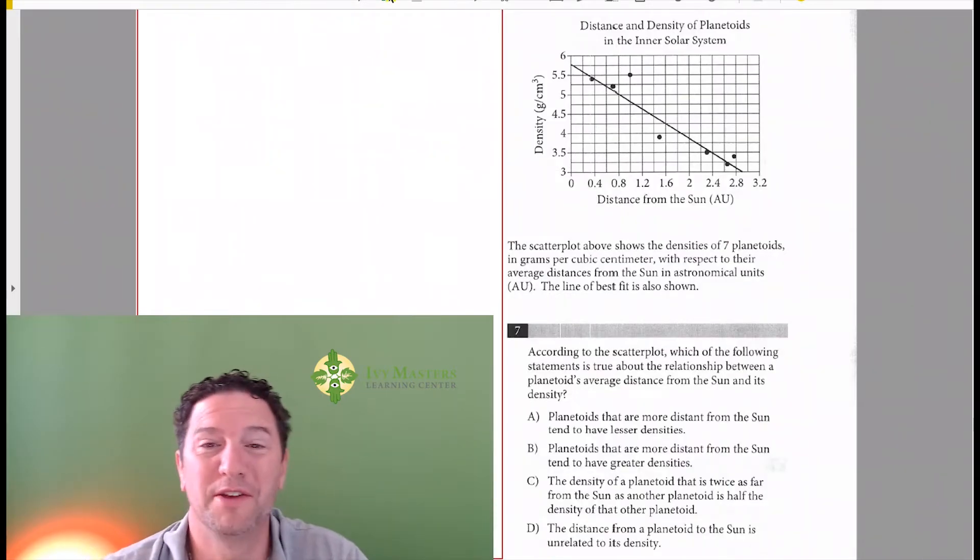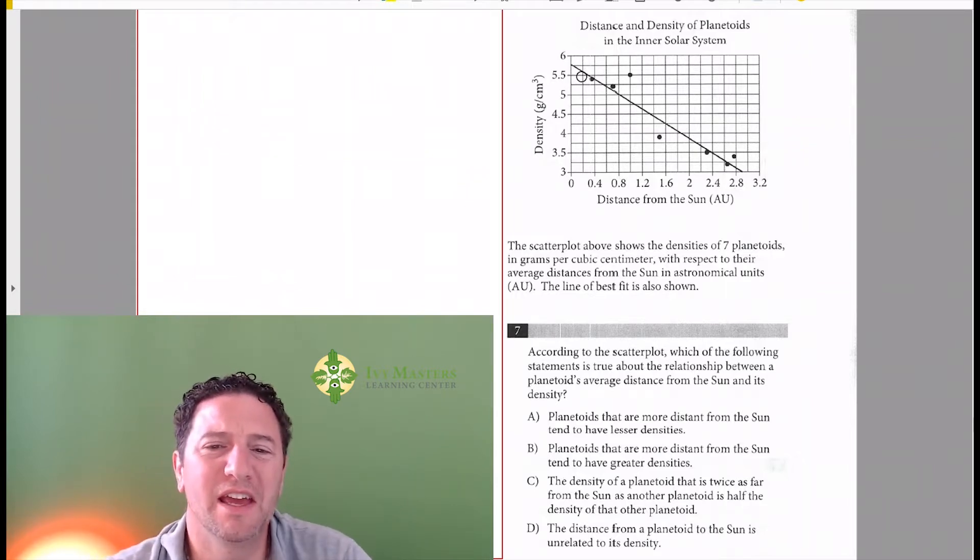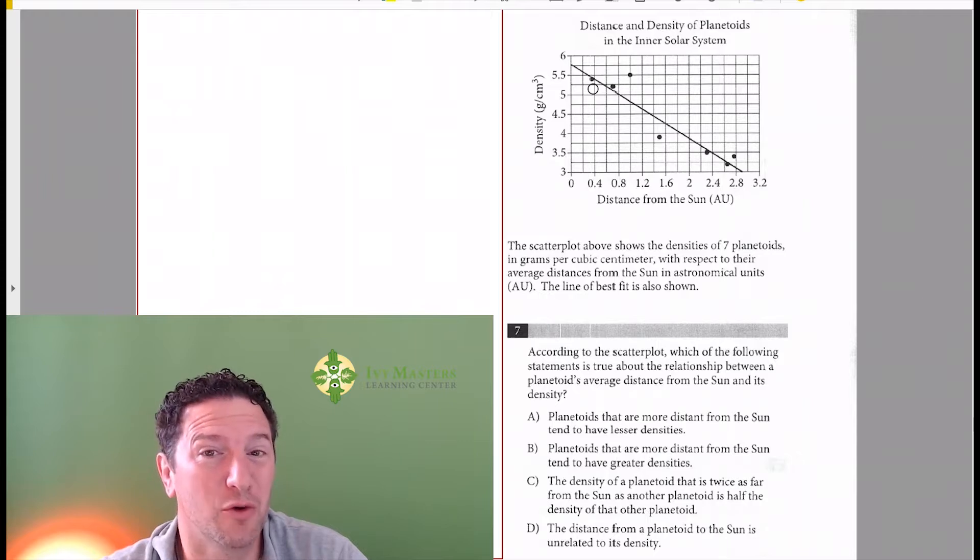Hi, I'm Paul Pasolka from Ivy Masters Learning Center and IvyMasters.com. Today we're going to look at Test 7, Section 4, Number 7, and what we see is a graph. When you see a graph, you've got to make sure you understand what's going on in the graph before you look at the answer choices.